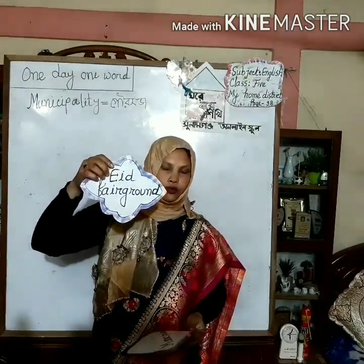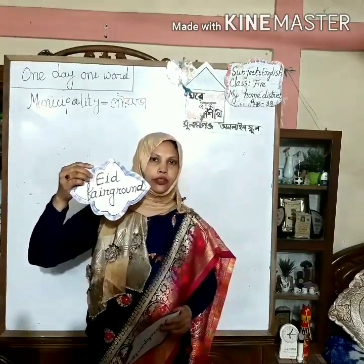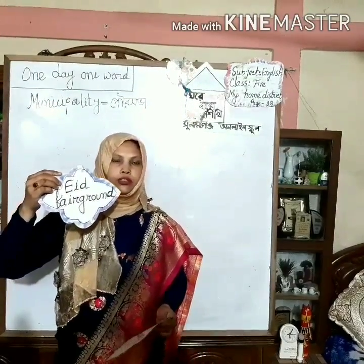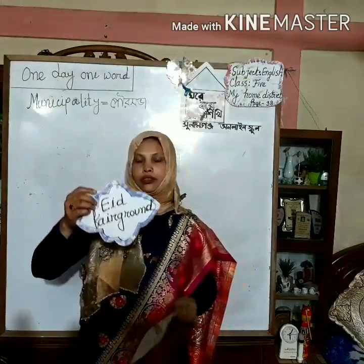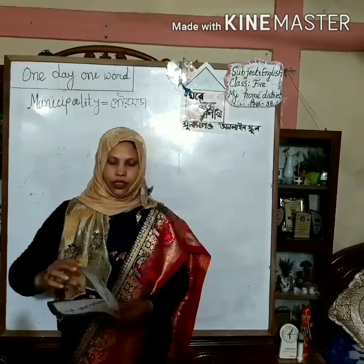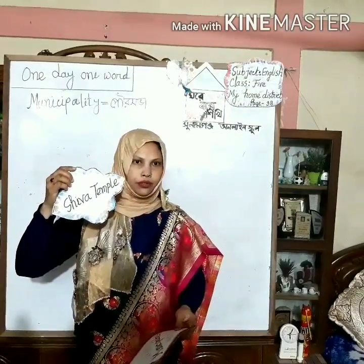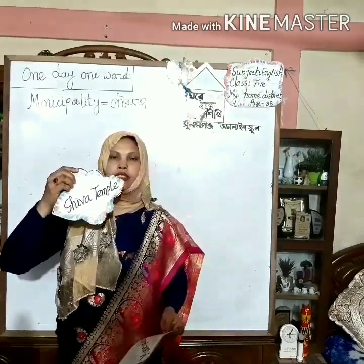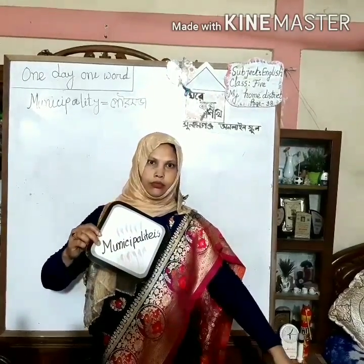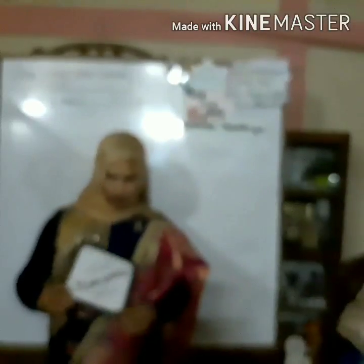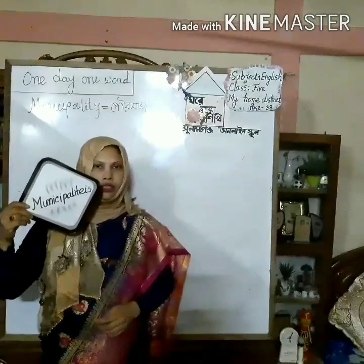The next word is 'Eid fairground.' Please pronounce with me — Eid fairground. Another word is 'Shiva temple.' Shiva temple. And the next word is 'municipalities.' Municipalities.